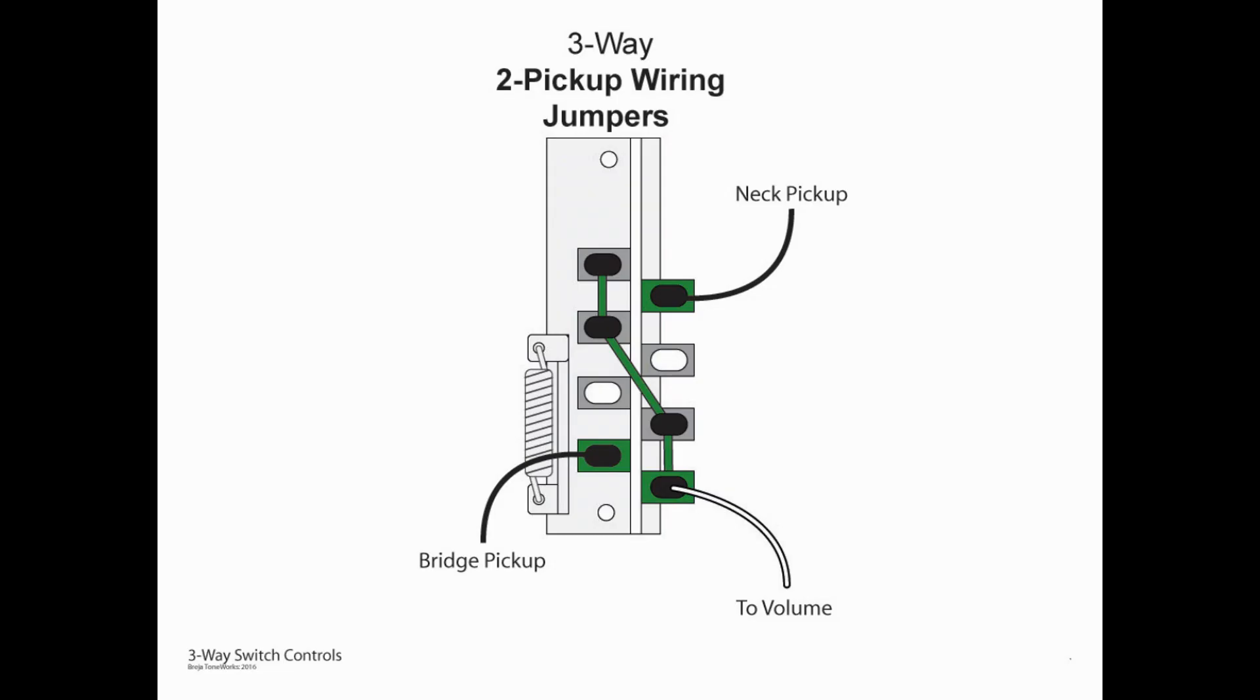So now let's take a look at exactly how this is operating. In position one which is the bridge only pickup you can see that on the left hand side A1 and A4 are joined, meaning the bridge pickup is coming in to A4, it's linking to A1 which via the jumper is getting us all the way to the volume pot. You can see the neck pickup coming into B1 is linked to B2 which is not part of our jumper scheme so therefore the neck pickup is not engaged.